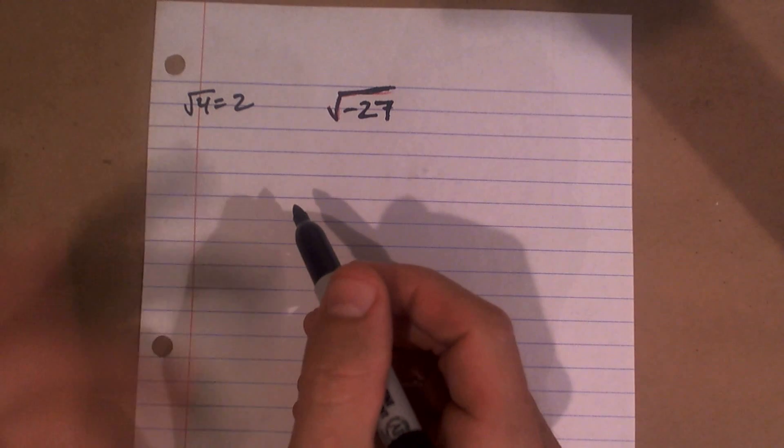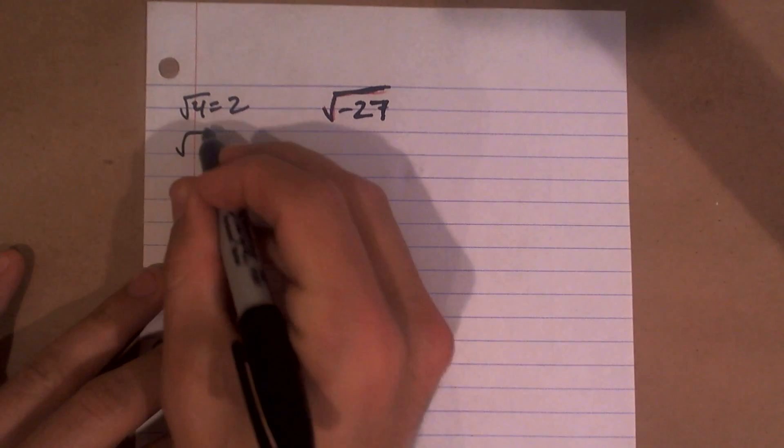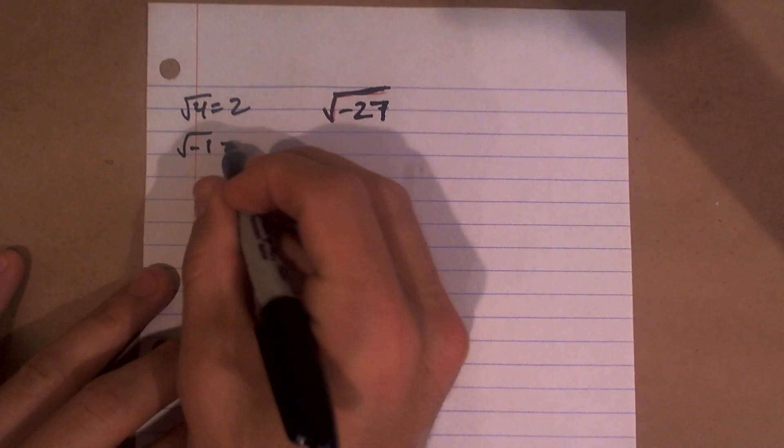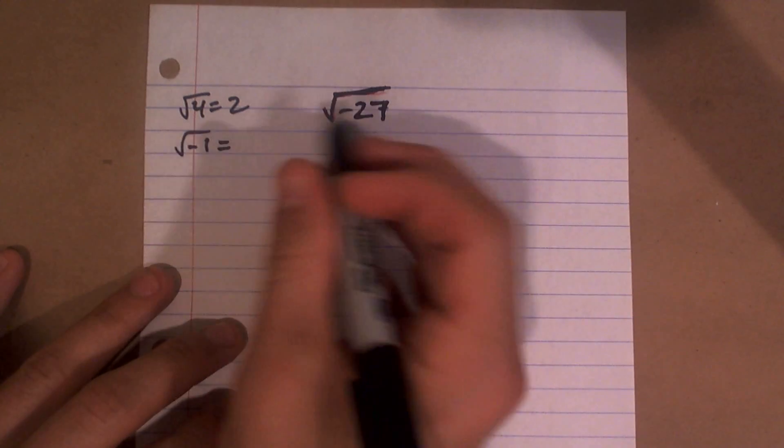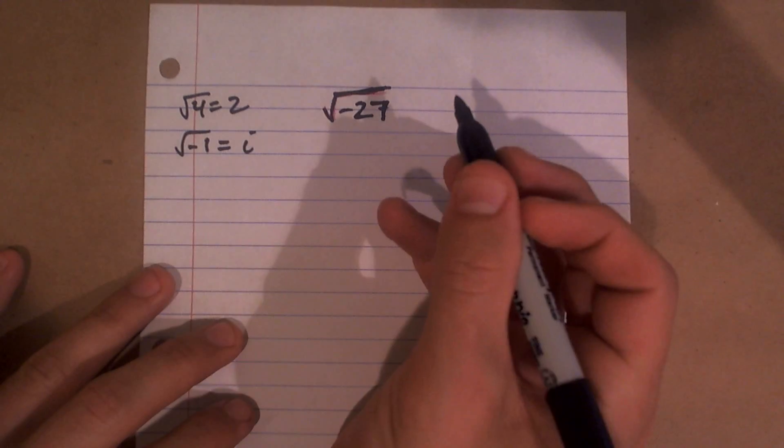So what we have is what we're going to call imaginary numbers. In simplicity, we can write the square root of a negative number, which we can rewrite as kind of negative 1, as i.